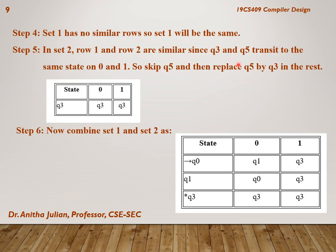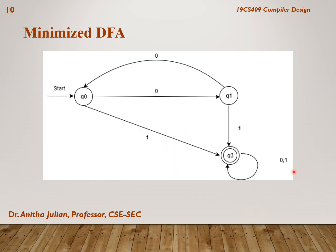Our next job is to find similar states. In set T2 (non-final states) there are no similar rows. In set T1 (final states), Q3 and Q5 were found to be similar — over input symbols 0 and 1 they transition to the same states. So Q5 is replaced by Q3. In step 6, we combine T1 and T2 into the final transition table for the minimized DFA. From this combined table we draw the minimized DFA.